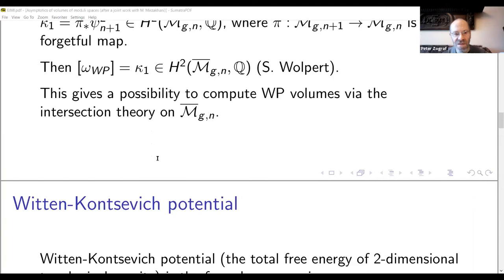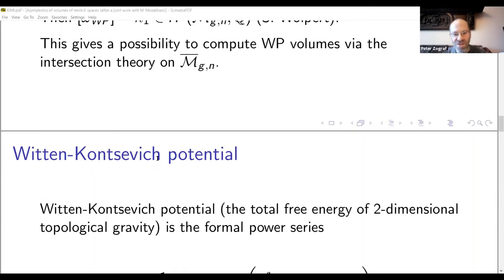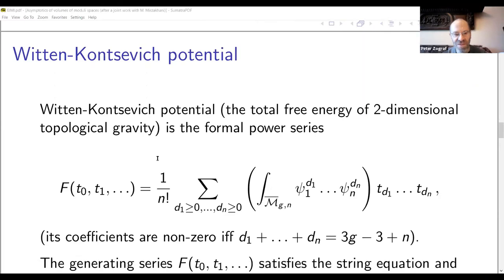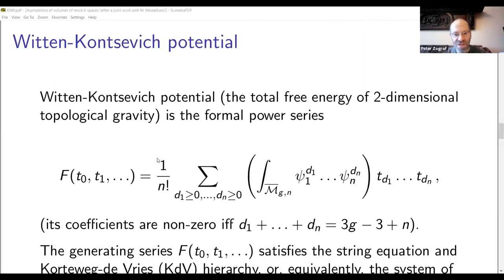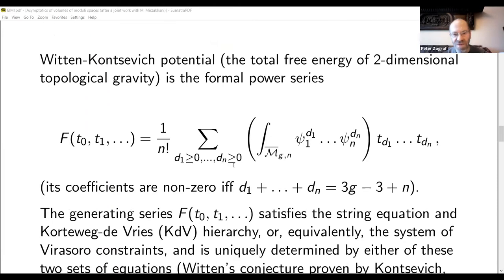To do that, let me introduce the Witten-Kontsevich potential or how Witten called it the total free energy of two dimensional topological gravity. This is a formal power series of infinitely many variables t_0, t_1 and so on. That is given by the formula here. That is the generating function for intersection numbers of tautological psi classes on the modular space M_{g,n} bar. And the coefficients, the integrals over the modular spaces are non-zero if and only if the sums of powers d_i is just the dimension of the modular space M_{g,n} bar.